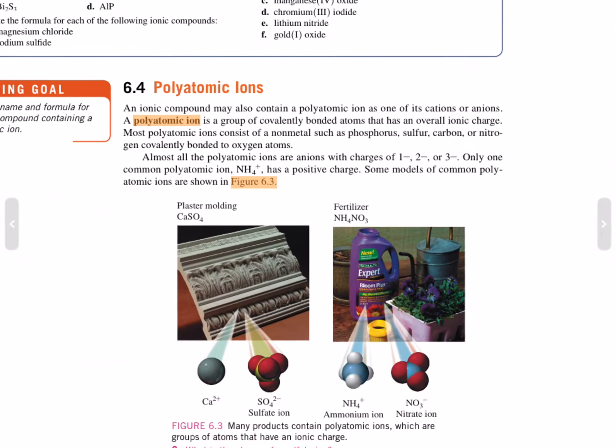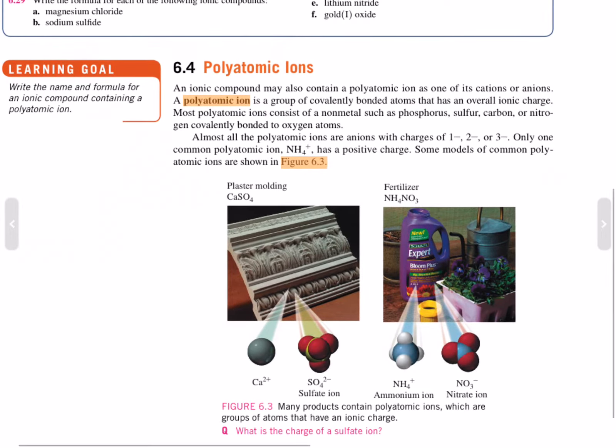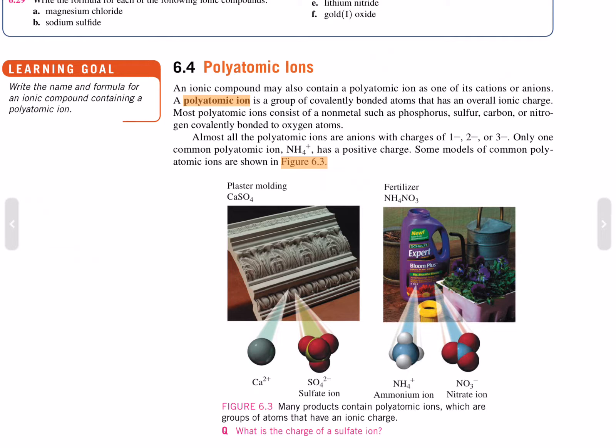Section 6.4, Polyatomic Ions. An ionic compound may contain a polyatomic ion as one of its cations or anions.